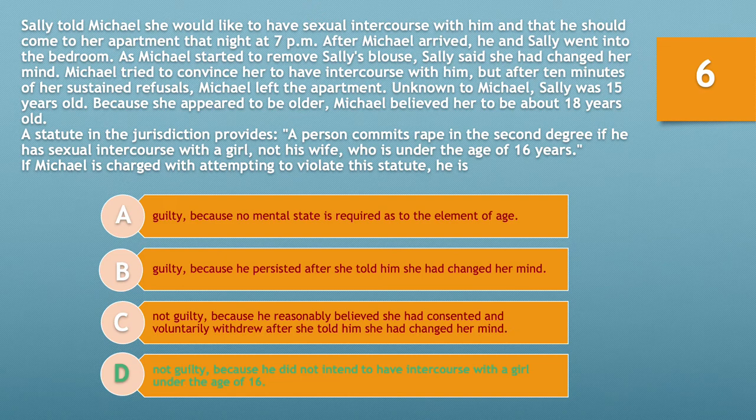If you chose option D — not guilty because he did not intend to have intercourse with a girl under the age of 16 — you'd be correct. In order to prove attempt, the state must show that the defendant intended to commit the crime and took a substantial step towards completing it. Regardless of the underlying crime, attempt is always a specific intent crime. Here, it is irrelevant that this is a strict liability claim.